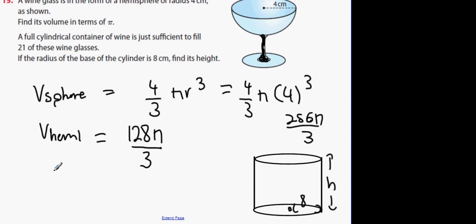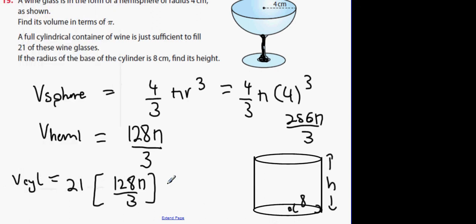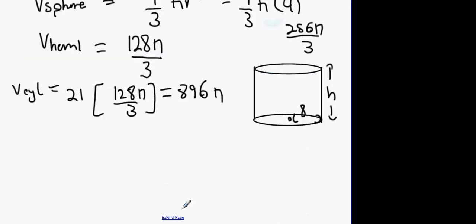Now what we're told about the volume of this cylinder is it's 21 glasses, correct? 21 glasses multiplied, 21 by 128 π over 3. So my answer of the last question multiplied by 21, and what we get is 896 π.